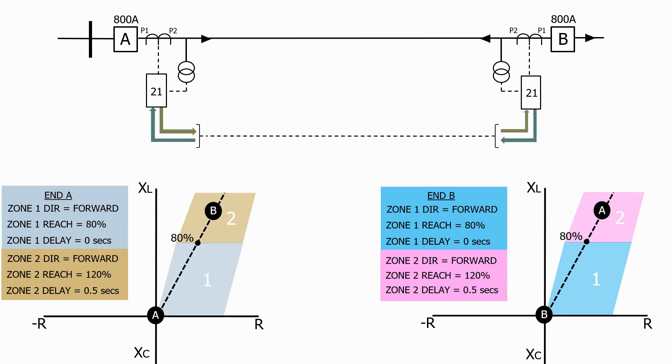Firstly let's energise the feeder. As we can see, both relays are now measuring the load impedance.